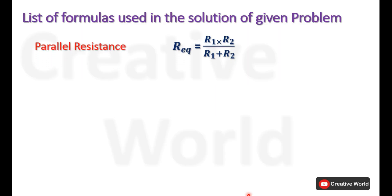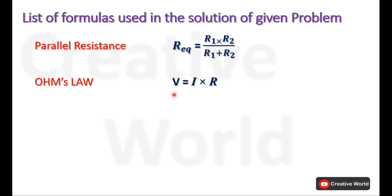While solving this problem we will use the equivalent resistance calculation formula for two parallel connected resistances: R_equivalent = (R1 × R2) / (R1 + R2). And according to Ohm's law, voltage across any resistance R is always equal to the product of current through that resistance and the value of resistance.